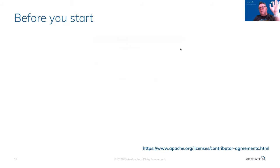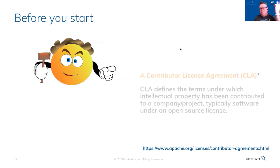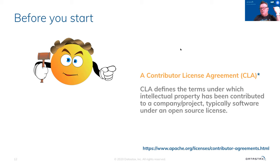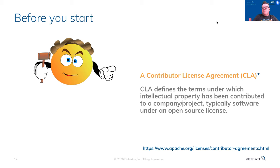Before you start doing any coding, you have to think about one thing: signing the Contributor License Agreement. That is an important step — you'll get the slides so you can click the link. The CLA is a critical piece of contributing code to an Apache project. Essentially what it says is that this is code that isn't owned by anybody else, and when you donate it, it is now freely a part of the Apache Software Foundation and can be applied to the Apache license. Every open source project has a contributor license agreement, and getting that signed first is the first step.